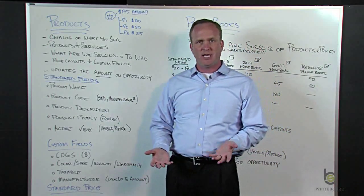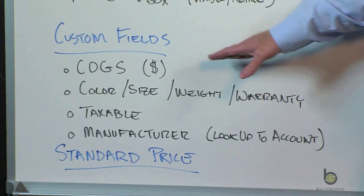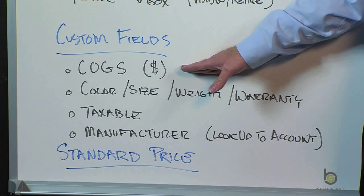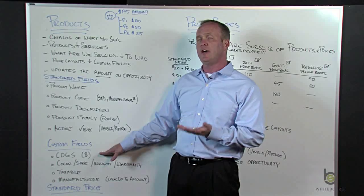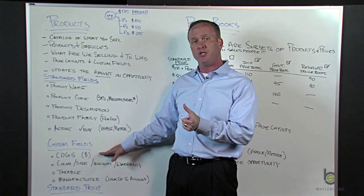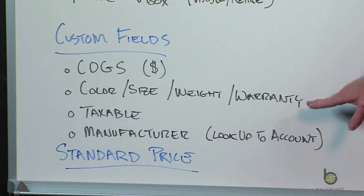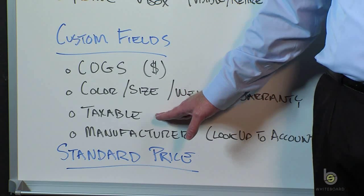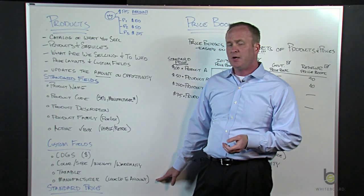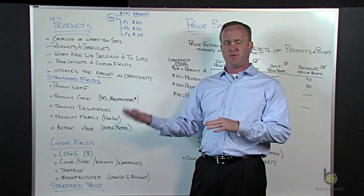Let's talk about custom fields. Products is a standard object and you can add custom fields. I'll give you some that I see a lot. COGS, or cost of goods sold — the cost of the product. You have a standard price which is your sell price, but your cost of goods is the cost of that product, so you can actually look at your margin — what was the sell price versus the cost of goods to get margin dollars. Other attributes could be things like color, size, weight, whether it has a warranty, a checkbox to show if it's taxable or not. You could also do a lookup to an account — so with a manufacturer field linking to an account, you could run reports on how much of your product catalog comes from a given manufacturer.